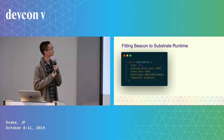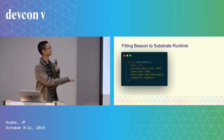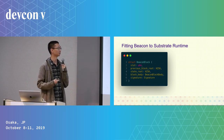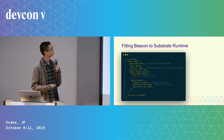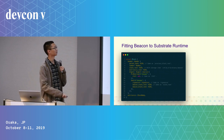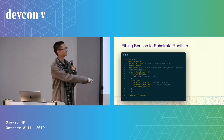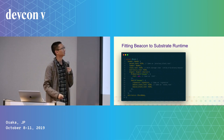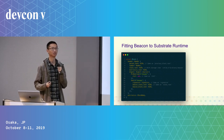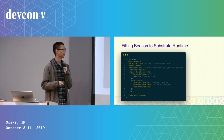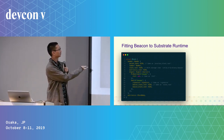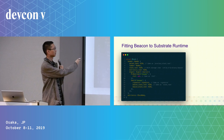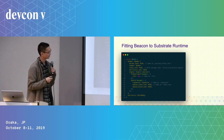To look at the actual structure: this is the standard beacon block, with slot, block root, state root, block body, and signature. For the substrate block, we make it so that some of the items are exactly the same as what's on the beacon block, ensuring a unique correspondence. For items that are consensus-specific — for example, the slot and the signature — we put them in the digest, so they are always readable whether you are a full client or a light client.